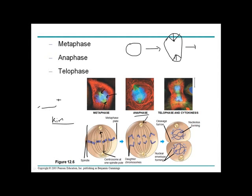During anaphase, the chromosomes are separated from the kinetochore-centromere region and pulled to opposite poles. After anaphase comes telophase, where the chromosomes return to a relaxed, less condensed confirmation. Histone proteins help reorganize them, and the nuclear envelope and nuclear lamina reform, producing two new daughter nuclei.